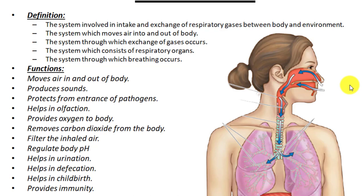The next function of the respiratory system is helping in olfaction — olfaction means detection of smell. In our nose we have olfactory centers and olfactory regions where olfactory neurons help in the sense of smelling. Detection of smell is also part of the respiratory system's role, because if you close your nose you will not be able to detect any smell.